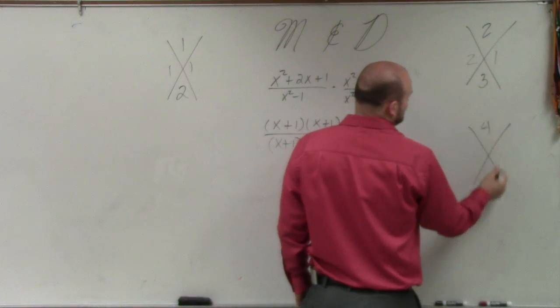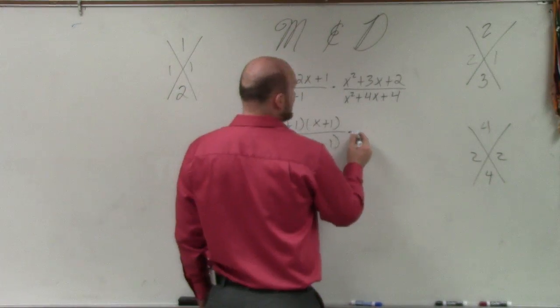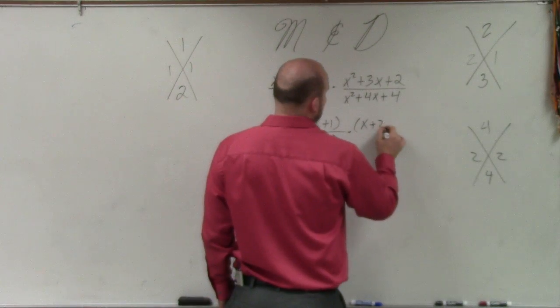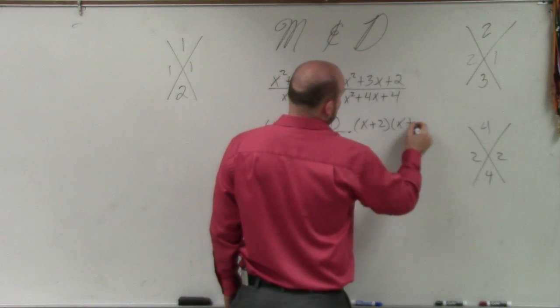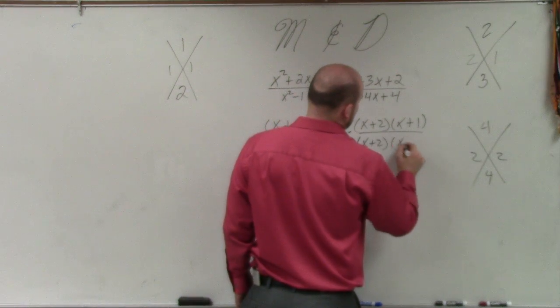Over here, what two numbers multiply to give you 4 and add to give you 4? That's going to be 2 and 2. So therefore, I have x plus 2, x plus 1 divided by x plus 2 times x plus 2.